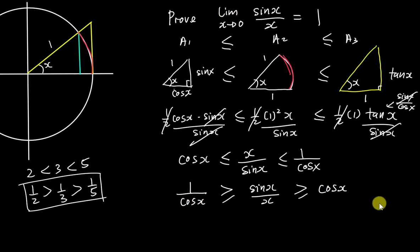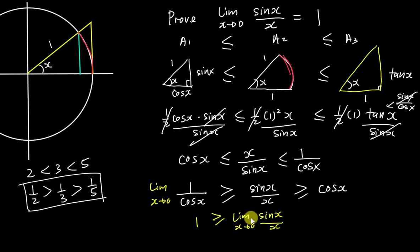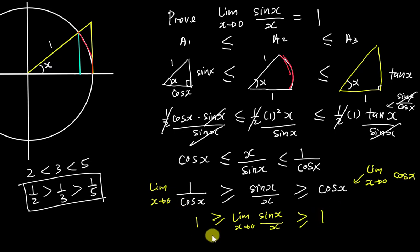Now I add the limit as x approaches zero to every term. For the first term: lim cos(x) as x→0 gives cos(0) = 1, so 1/1 = 1. The middle term is exactly the limit I want to prove, so I just write it down. For the last term: lim cos(x) as x→0 also gives one. So I now have the limit of sin(x)/x squeezed between one and one.